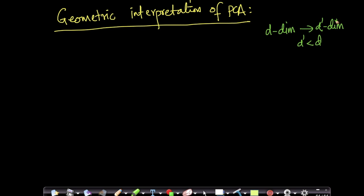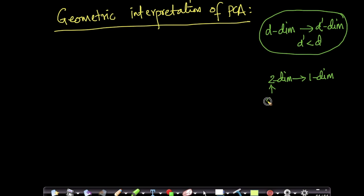Since it's hard for us to even draw 3D spaces on a 2D blackboard like this, we'll show a simple example of how to reduce dimensions from 2D to one dimension. So this is my d right now and this is my d'. Whatever we learn here using linear algebra, we'll scale all of that to higher dimensions. This is much more easy for us to interpret and understand.